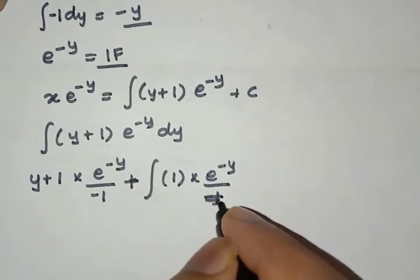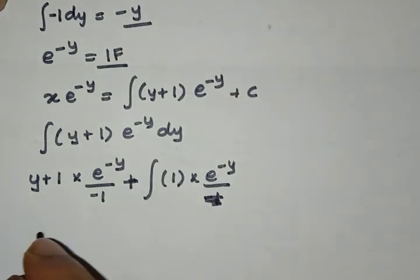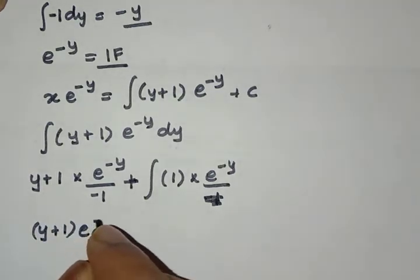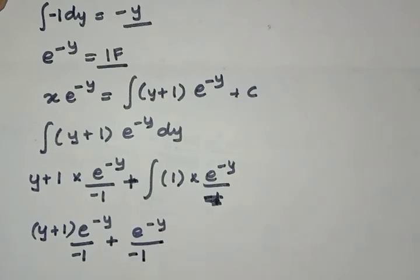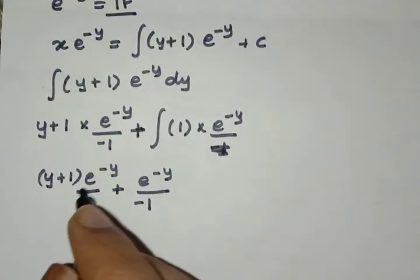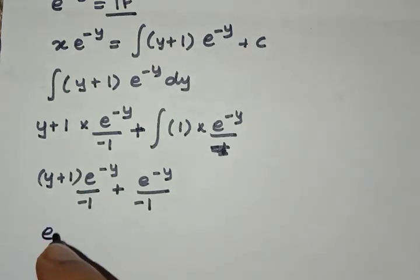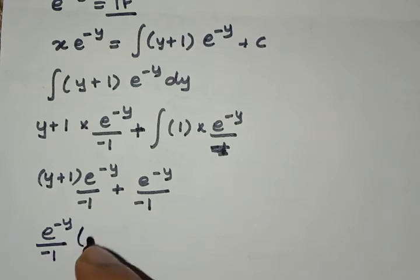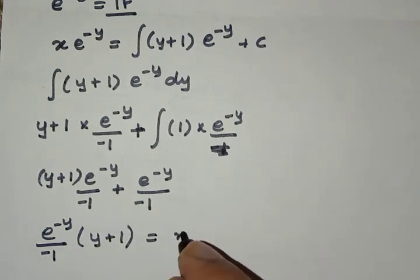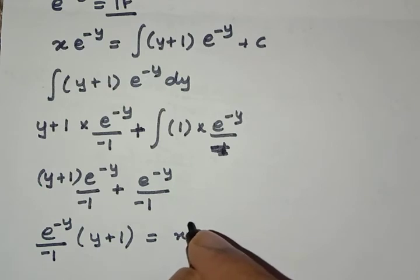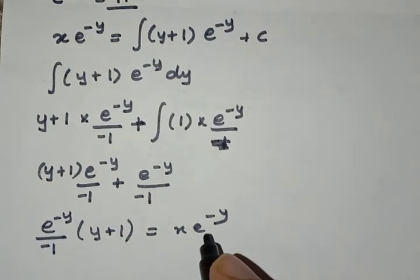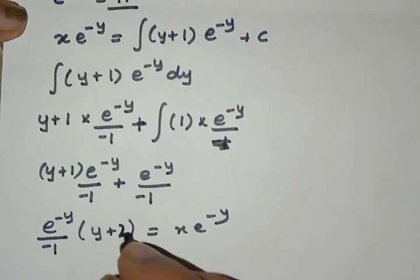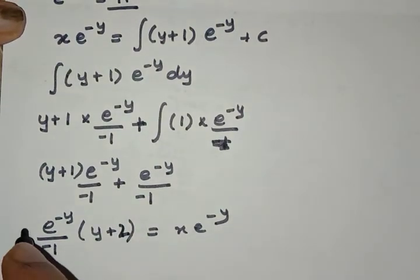We get a plus sign. So we have (y plus 1) times e raised to minus y divided by minus 1, plus e raised to minus y divided by minus 1. Taking e raised to minus y divided by minus 1 as a common factor, we get: e raised to minus y times (y plus 2) is equal to x times e raised to minus y. This simplifies to minus(y plus 2), and there is also a constant c here.